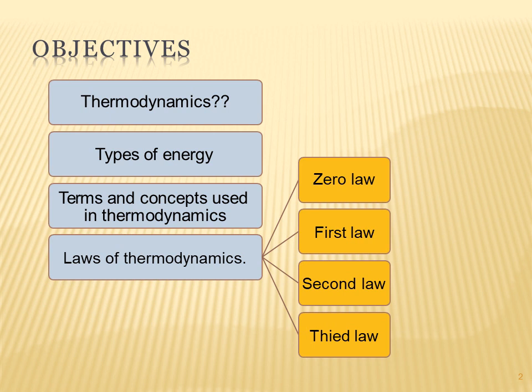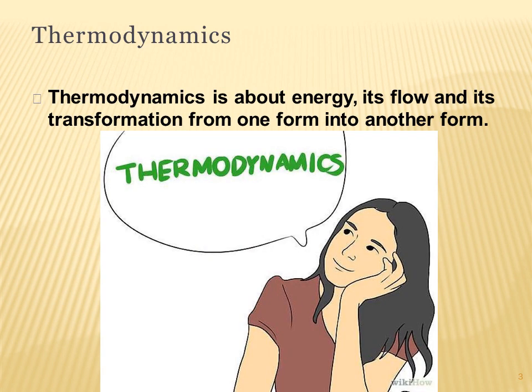Finally, the laws of thermodynamics: we have the zeroth, first, second, and third law of thermodynamics. The best and simplest definition of thermodynamics is about energy, its flow, and its transformation from one form into another — meaning the main idea is that energy converts from one form to another, whether it's work, friction, or heat.